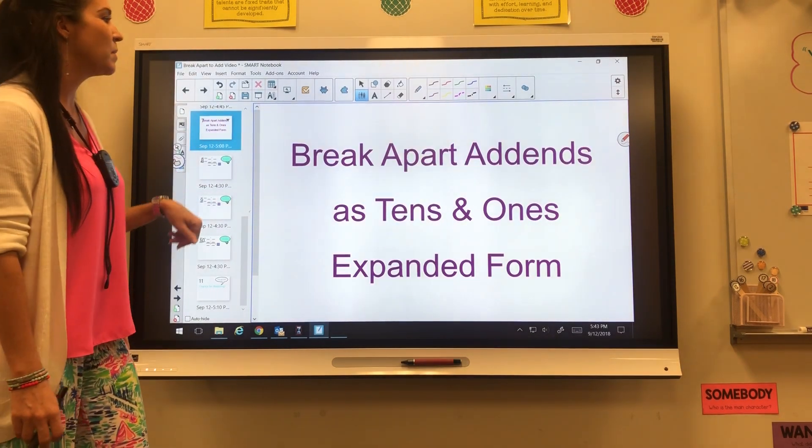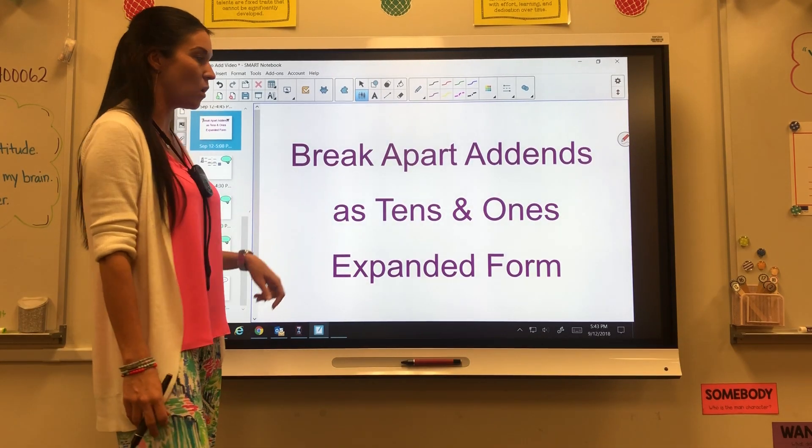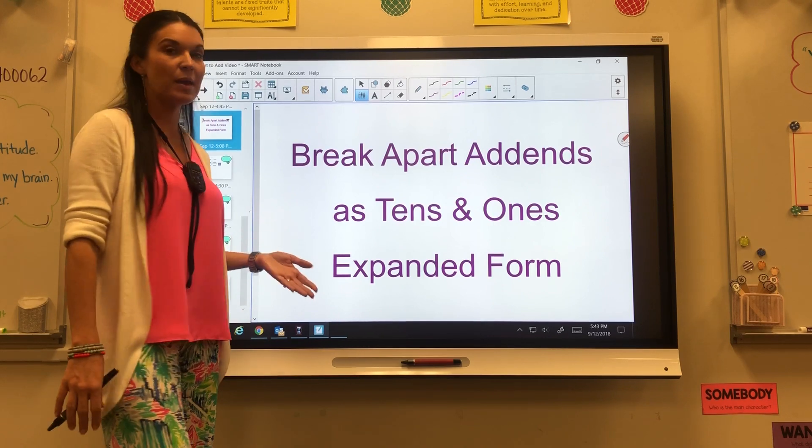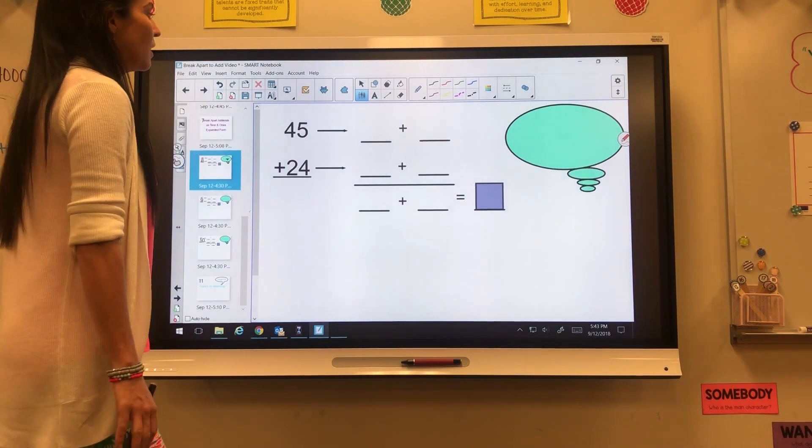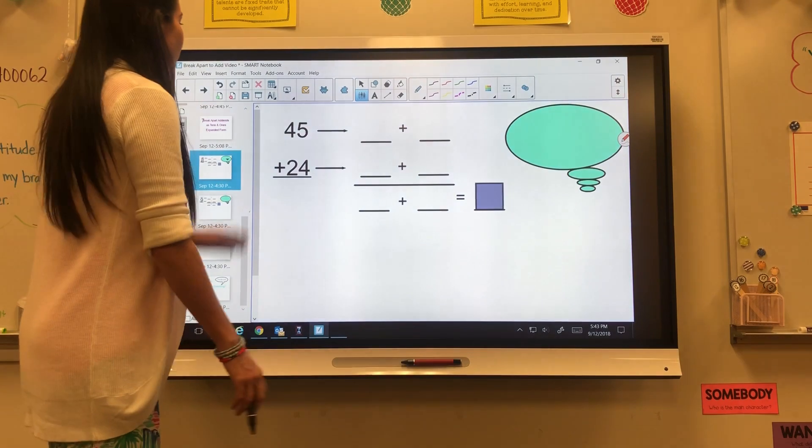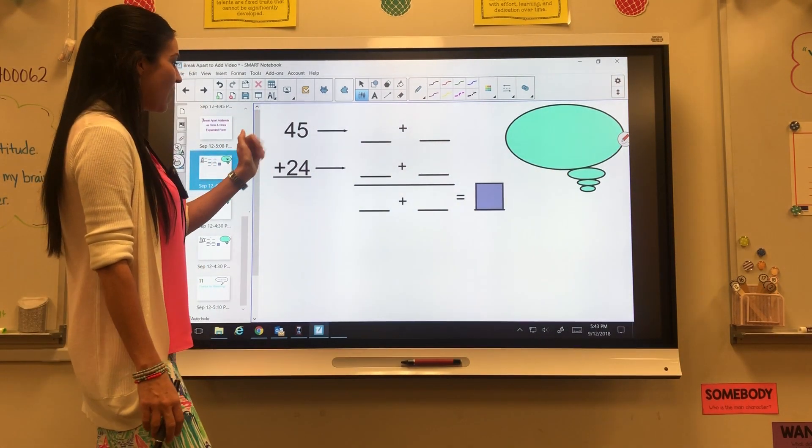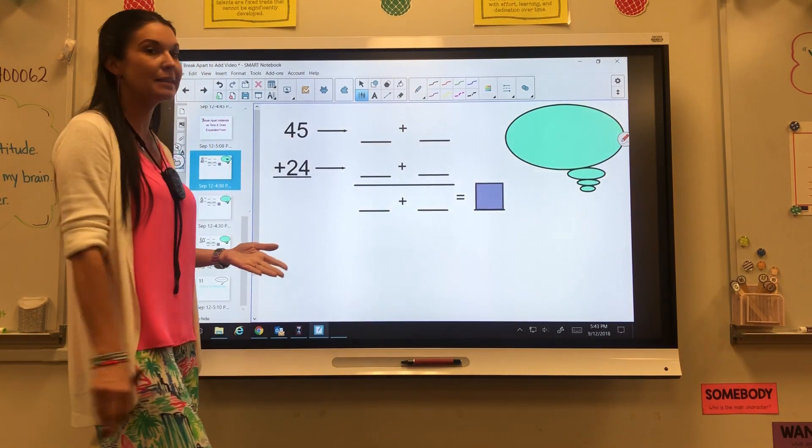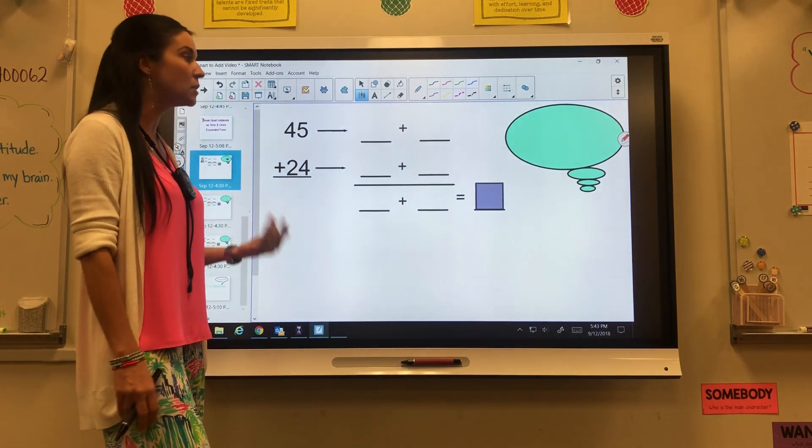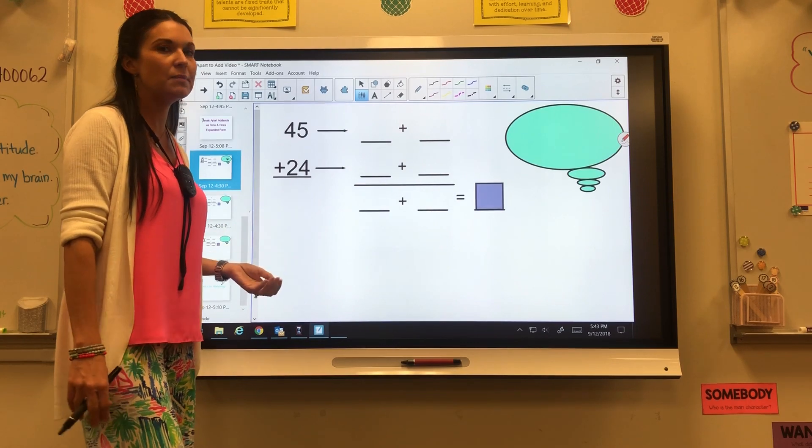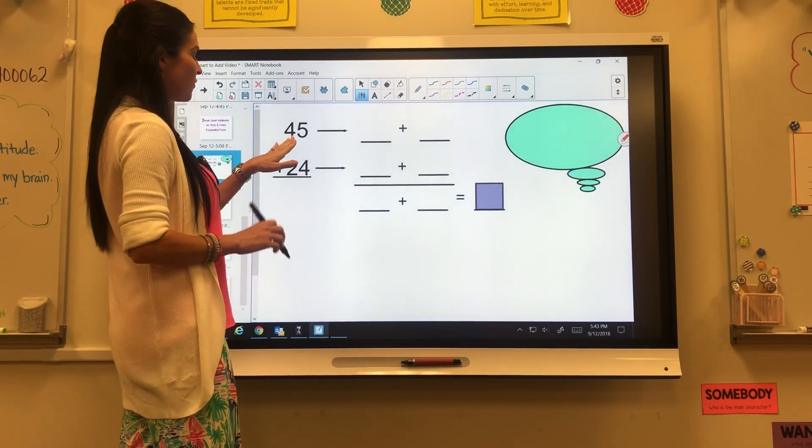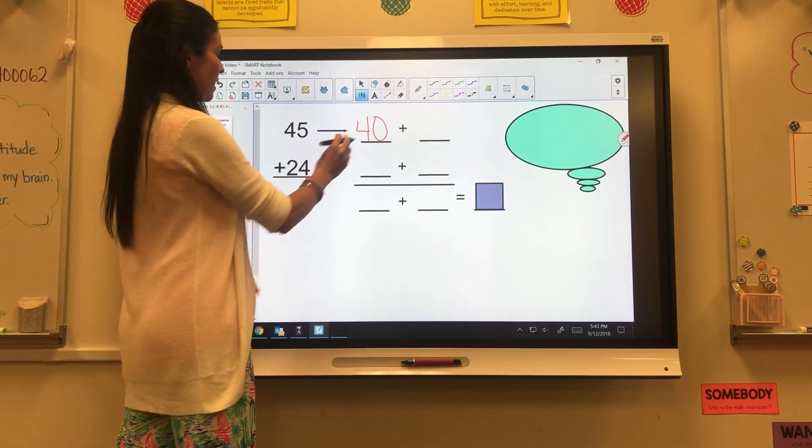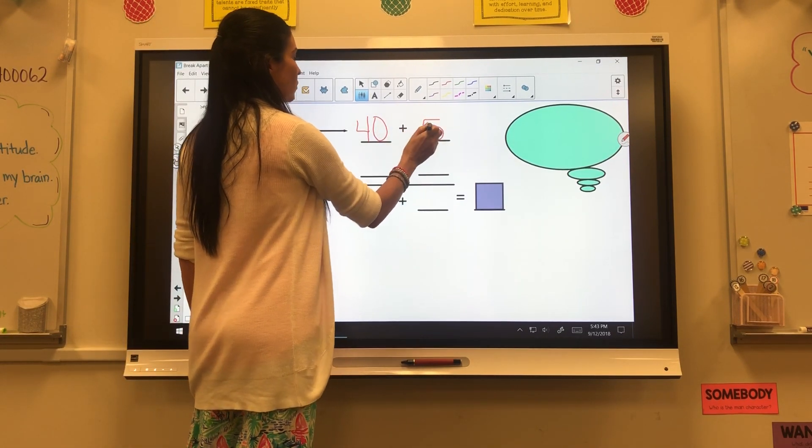Next, we've been breaking apart addends as tens and ones or also like we did last unit with expanded form. It looks like this. They have 45 plus 24. We're going to break that up over here into expanded form, which is going to make the adding a lot easier. It looks like more work, but it really makes it easier in the end. So if I have 45, I'm going to take my tens, which is 40, and then plus my ones, which is 5.